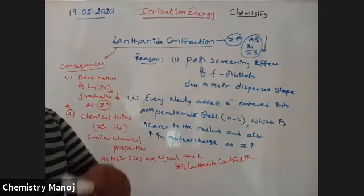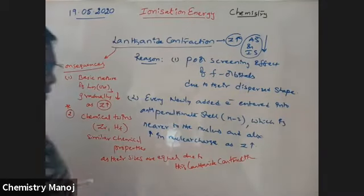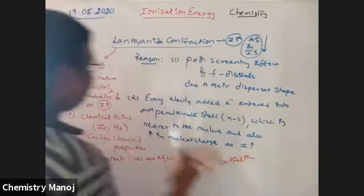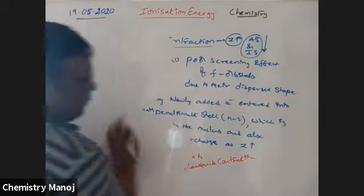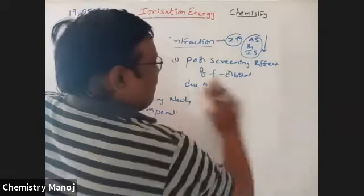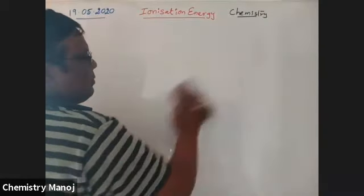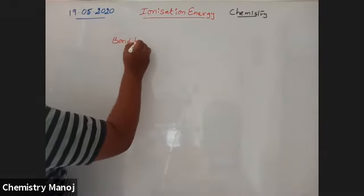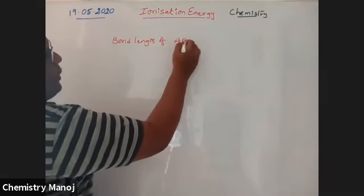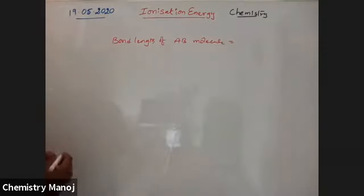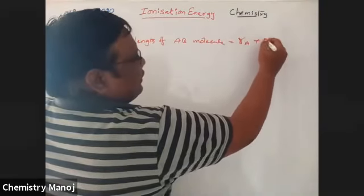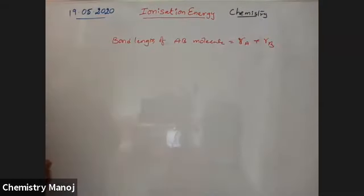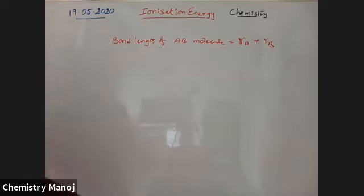Now I'm going to discuss some problems based on atomic size. In any diatomic molecule AB, the bond length is equal to the radius of A plus the radius of B — that is, the sum of the radii of the two bonded atoms equals the bond length.